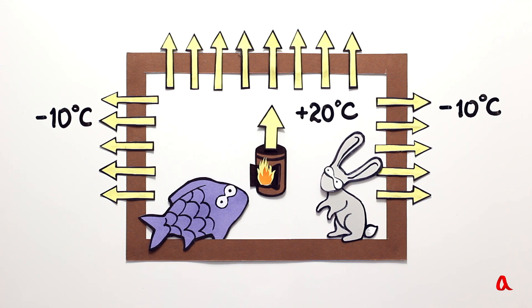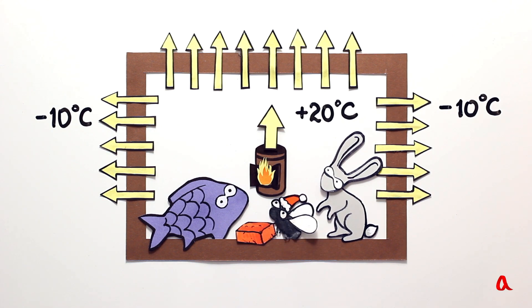First of all, it depends on what the walls are made of. Metals are great conductors, so one shouldn't make walls out of them. A brick wall of the same thickness is a hundred times less conductive.